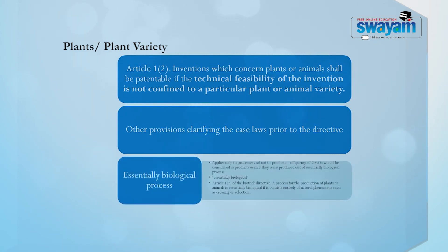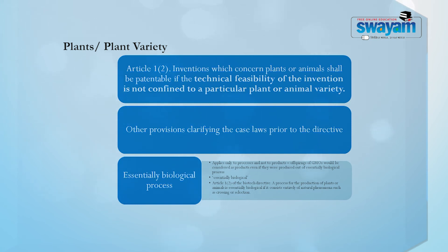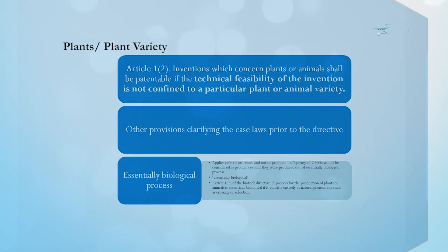Now, what are essentially biological processes that are excluded? The exclusion applies only to processes and not to products — that is very important. Offspring of GMOs, that is genetically modified organisms, would be considered as products even if they were produced out of essentially biological processes. This means self-replicating seeds, self-replicating plants which produce seeds, and seeds of such plants would be covered by the patent, precisely because although these are produced out of essentially biological processes, they were produced through GMOs.